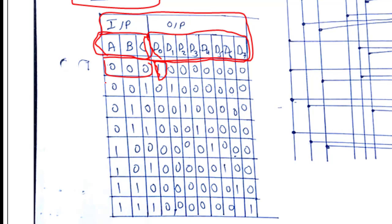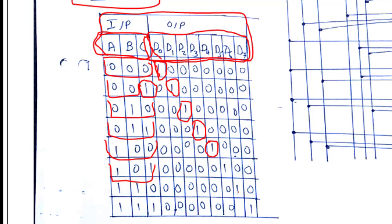In the second combination, A and B are zero and C is one, so D1 will be high. In the third combination, the input is zero-one-zero and we will get output D2. For the combination zero-one-one, we will get D3 as output. For the input combination one-zero-one, we will get D5 as output.